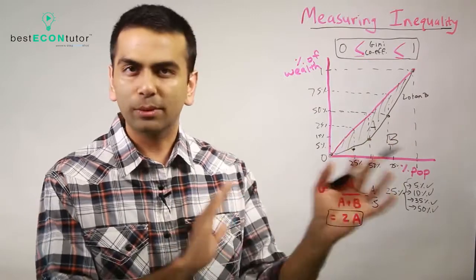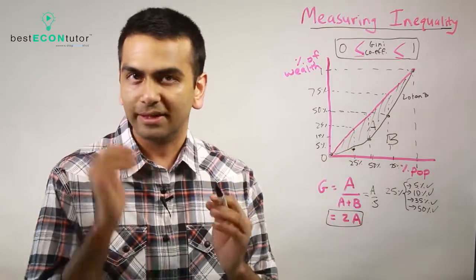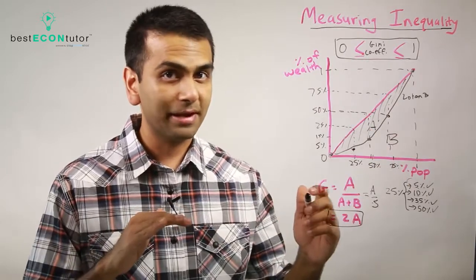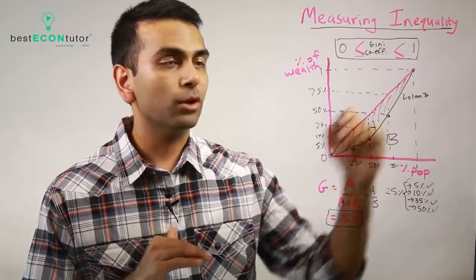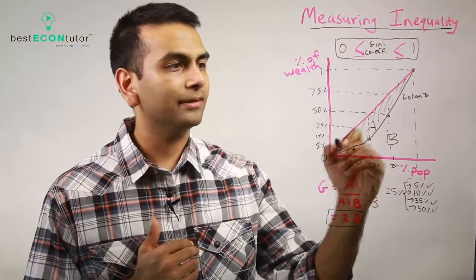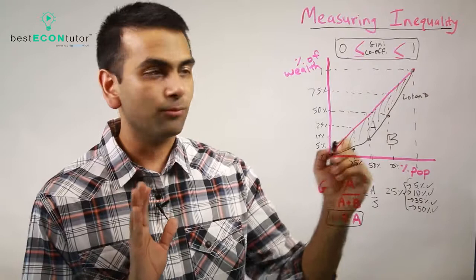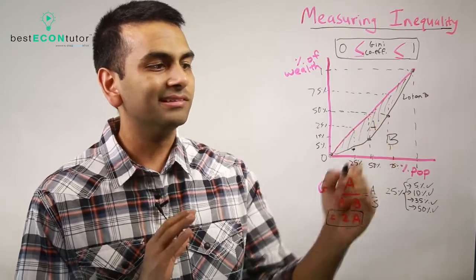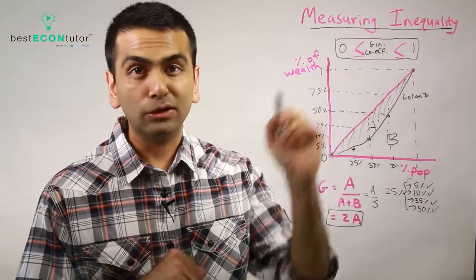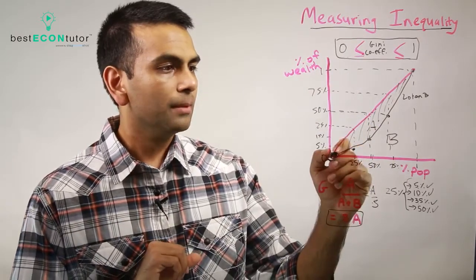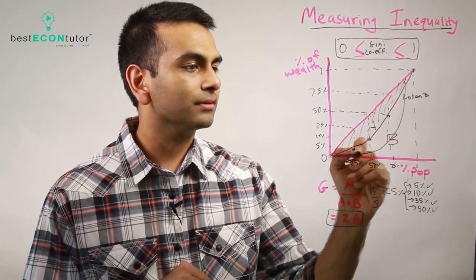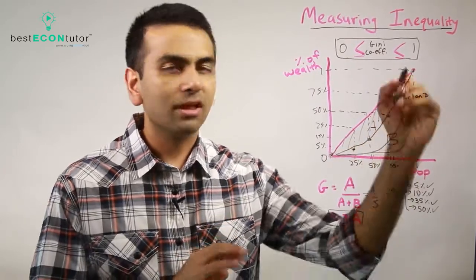Now if we look at extreme examples: if you have a society where everyone has the same amount of money, then your Gini coefficient is 0. Zero means perfect equality because in that case, the black and red lines are the same, so area A is 0. Zero out of 0.5 is still 0, so there's no inequality.